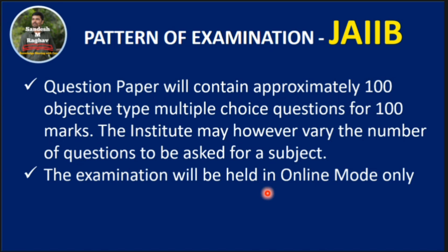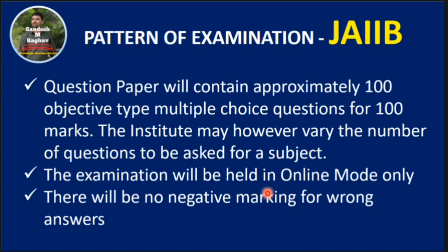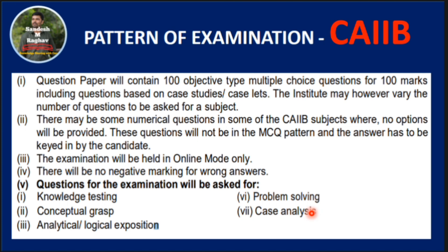The examination center you need to select at the time of registration. There will be no negative marking for wrong answers. For CAIIB, you will also attend 100 objective-type questions. However, there are some numerical questions with no options — no MCQs — where you will get a text box and need to enter the answer. The examination is held in online mode only, and there will be no negative marks for wrong answers.